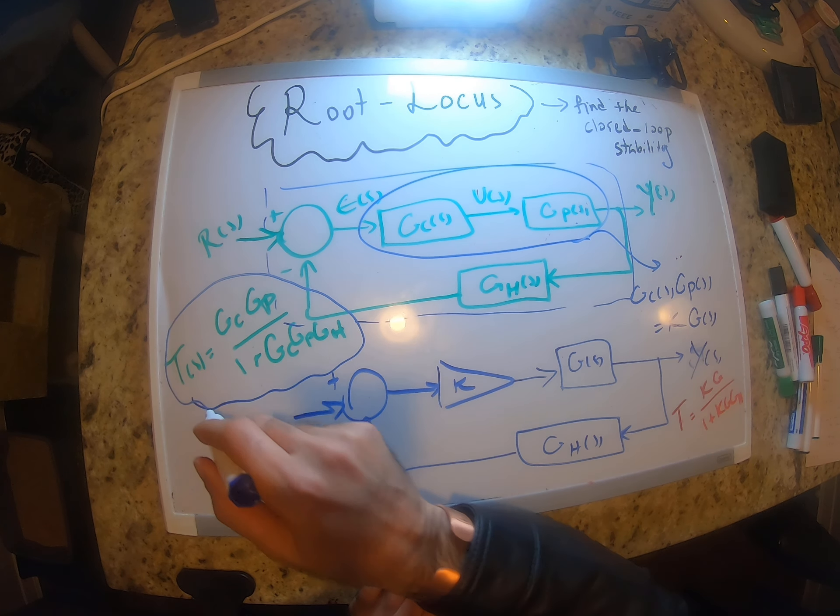Now let's factor out a constant from these two combined transfer functions, and lump all the other terms into another transfer function called G(s). The controller can be a P controller, PI controller, PID controller, or any other controller — we assume we can always take a constant out and call the rest of the system G(s). It's basically a renaming of variables.